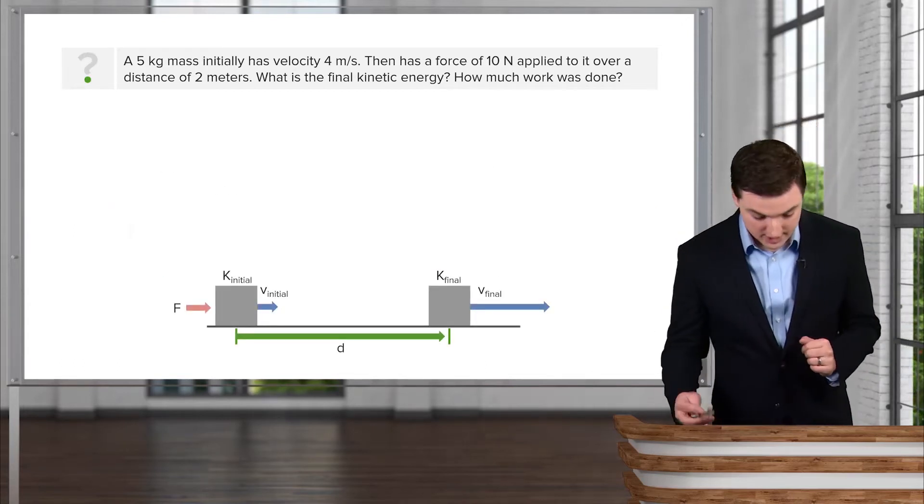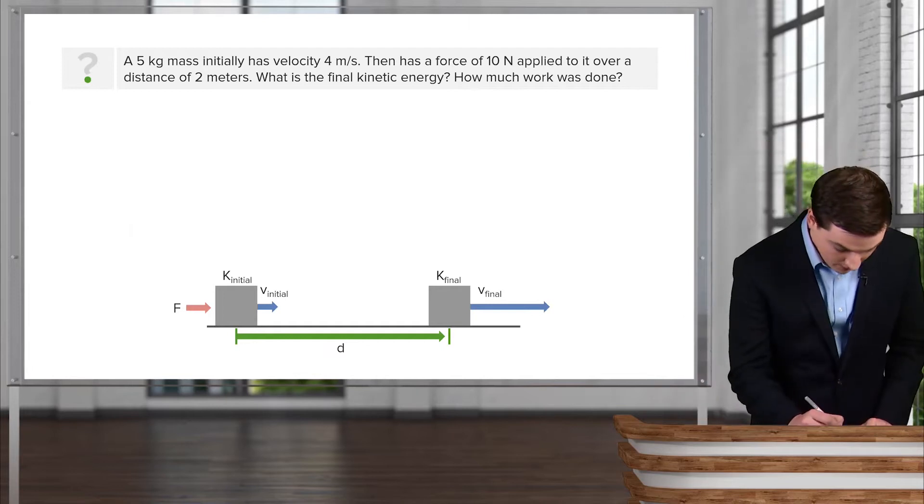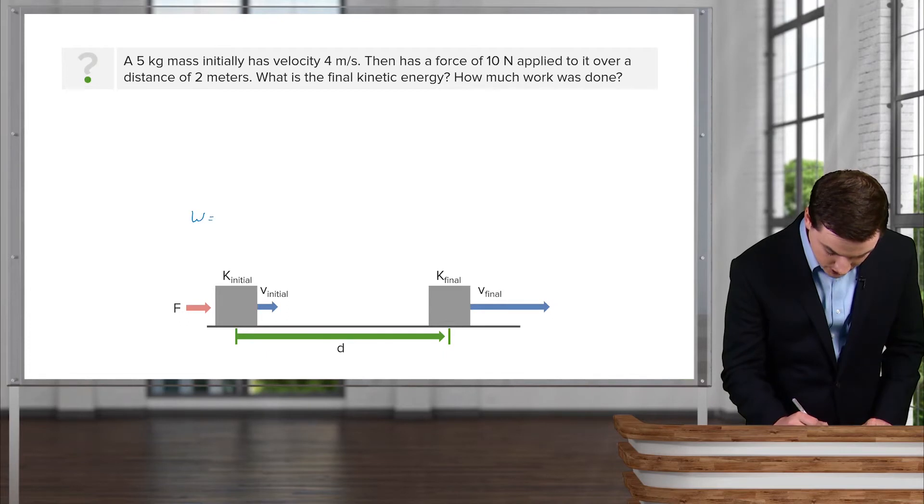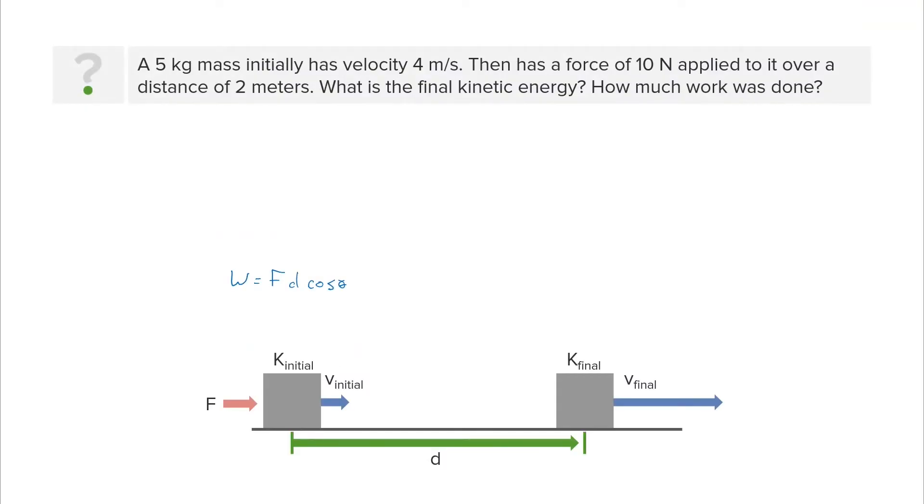Writing this all out, we can see that the total amount of work that was done is equal to the force times the distance times the cosine of the angle between these two. Because the direction of motion is to the right and the force is also to the right, the angle between them is zero.